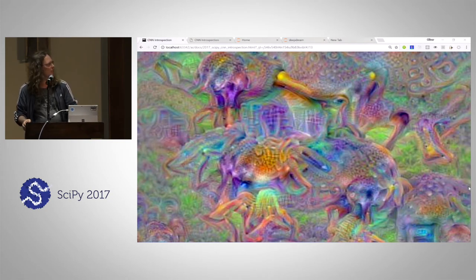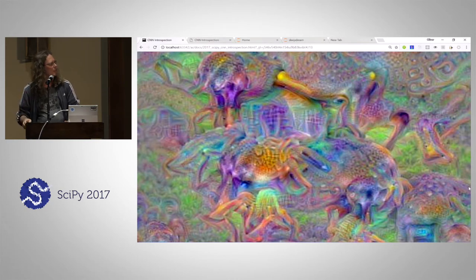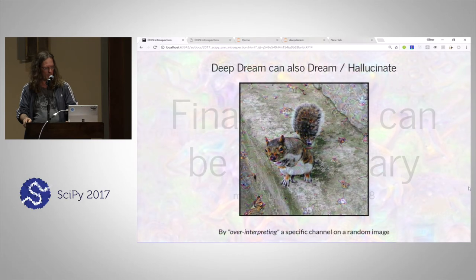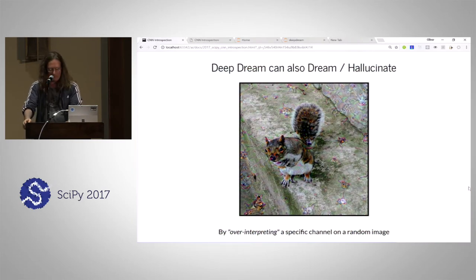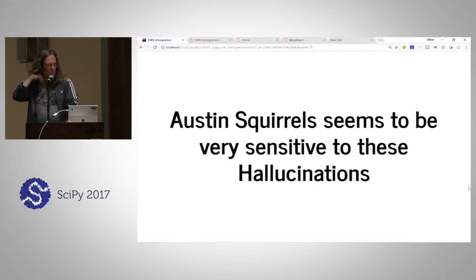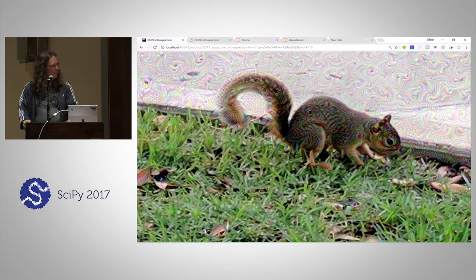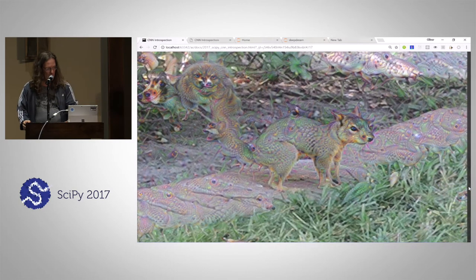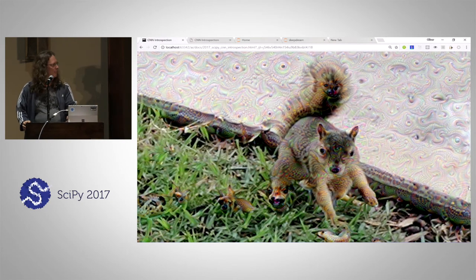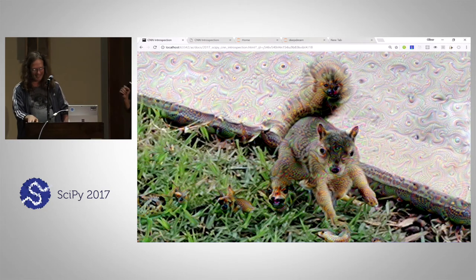Inspired by that, because it's scary, some people actually use it to add hallucinations or dreams to real pictures. This is like the picture of a squirrel and they added a certain over-activated feature channel to that squirrel. That feature channel contains snouts of dangerous dogs or something. It reminds me a little bit of hallucination. It turns out that Austin squirrels are also very sensitive to these hallucinations. I just prepared this half an hour ago. It's full of snouts. Even out of the ear of the squirrel, you see a snout.